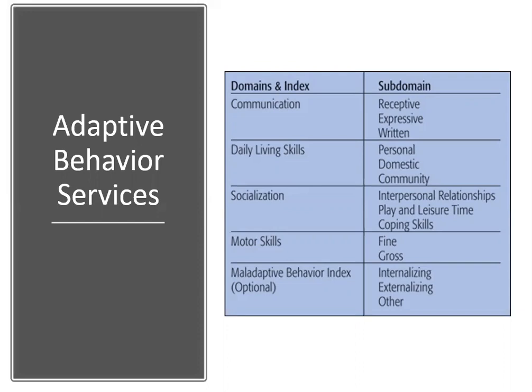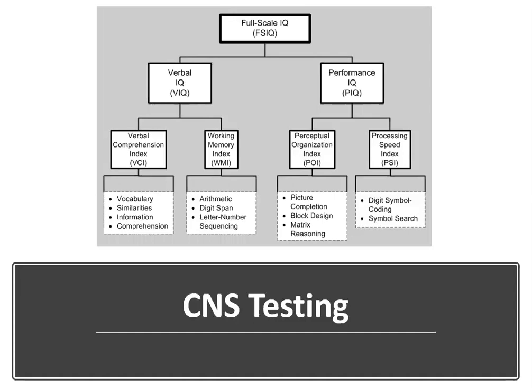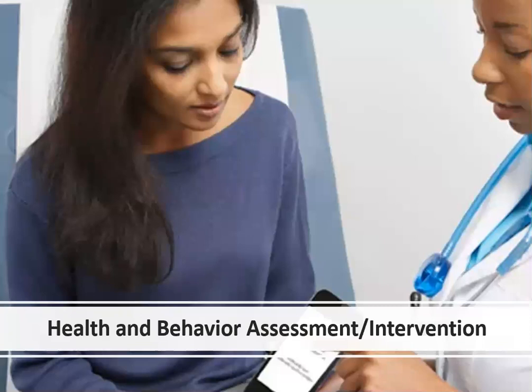There are lots of subsection notes and definitions to review as they impact your code assignments. Before you get to adaptive behavior assessments, on page 722 you have the overall adaptive behavior services guidelines. Next up, CNS testing is on page 725, starting with subsection notes and definitions and a really useful table on pages 725 and 726. These codes are specifically for the central nervous system — they look at central nervous system functions.